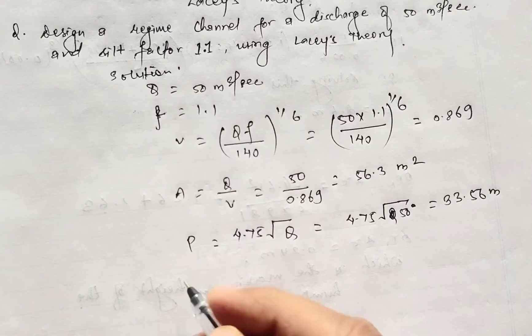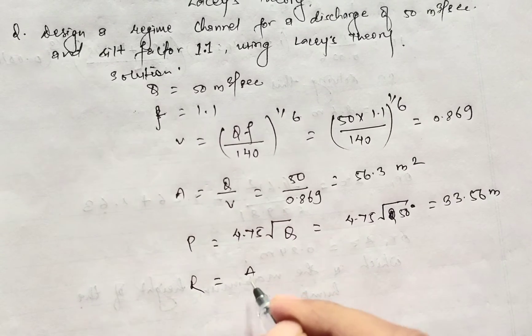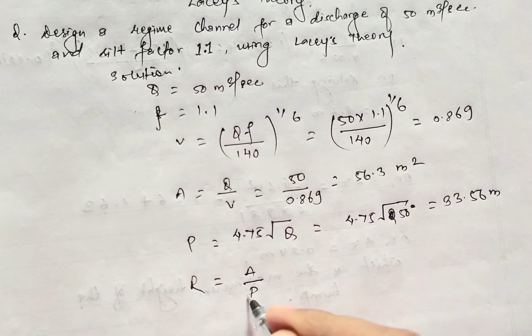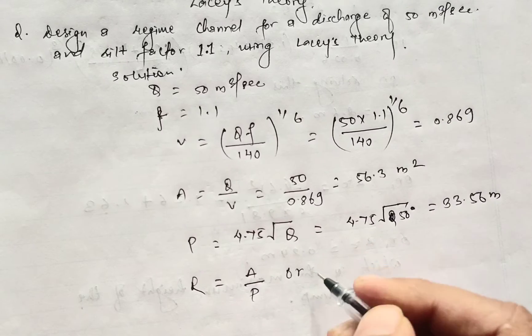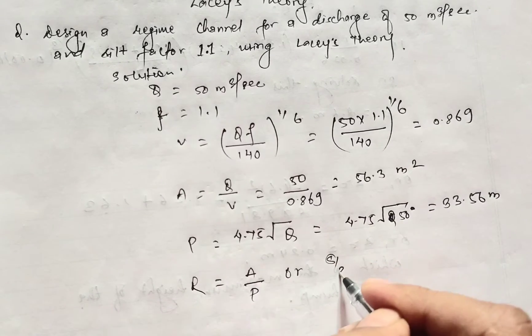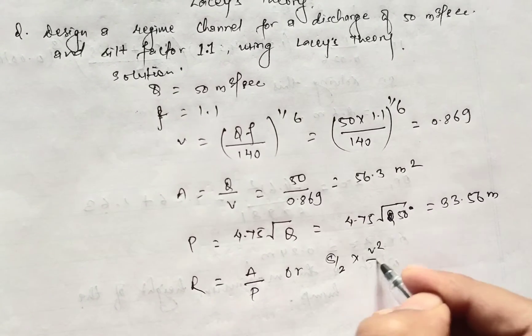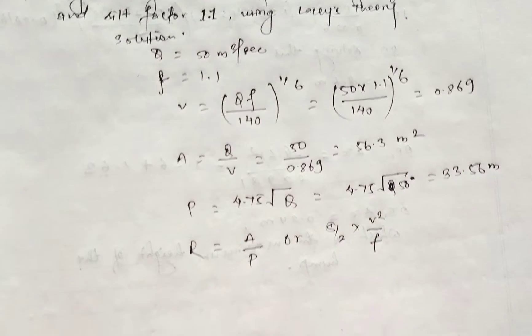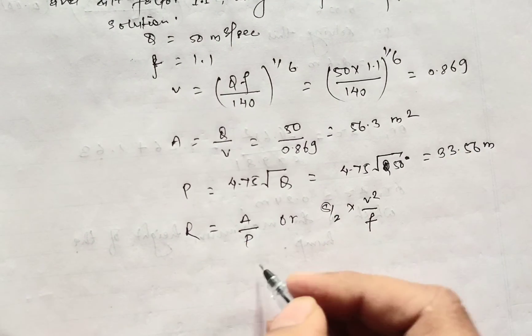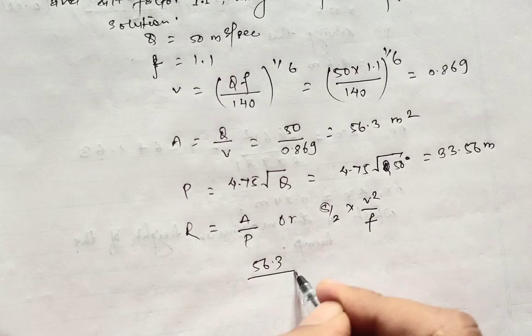After that we'll calculate the hydraulic radius R. You can calculate it using A by P, or you can calculate it using 5 by 2 times V square by F. So A by P is 56.3 divided by 33.56.